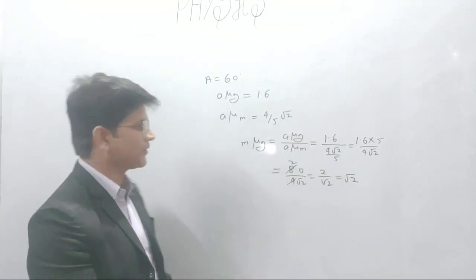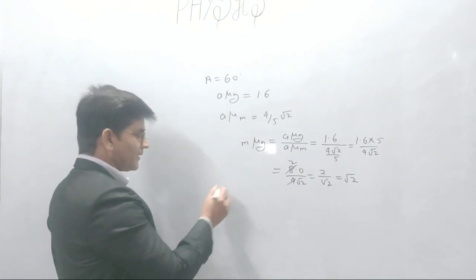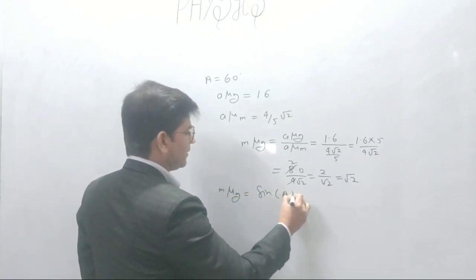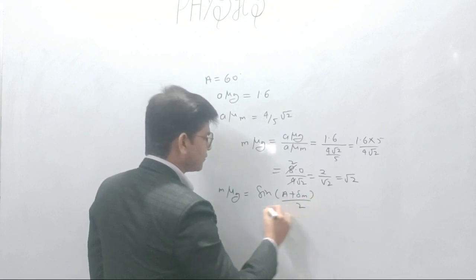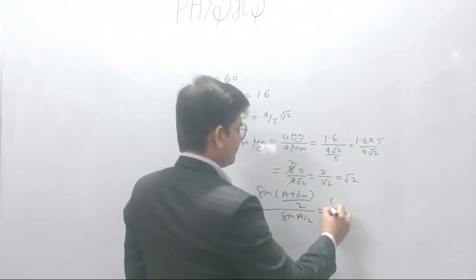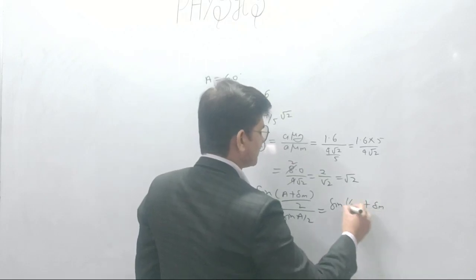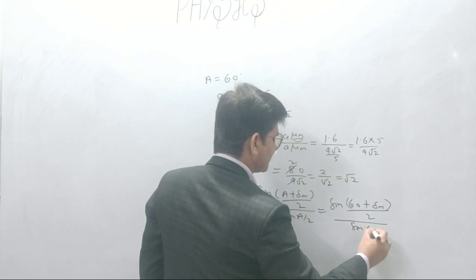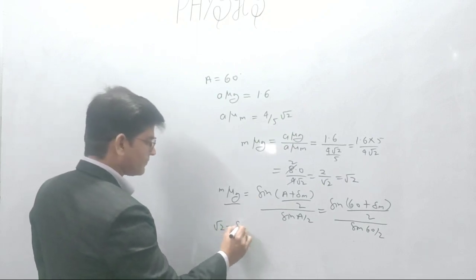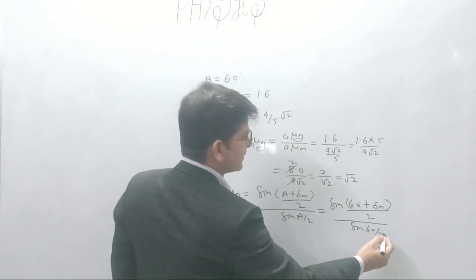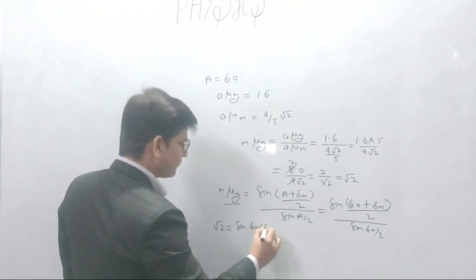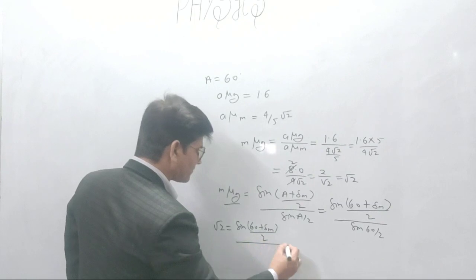Now we calculate the angle of minimum deviation. We know the formula: the refractive index with respect to the medium equals sine of (A + delta_m) divided by 2, all divided by sine of A by 2. Here A is 60 degrees, so this equals root 2 equals sine of (60 + delta_m) divided by 2, divided by sine 30.